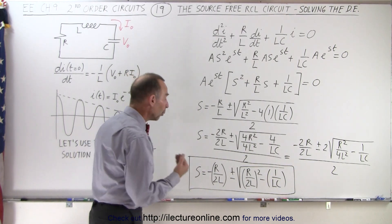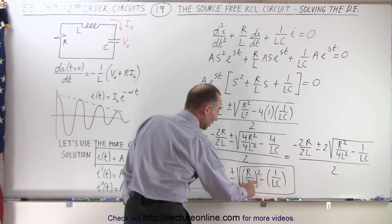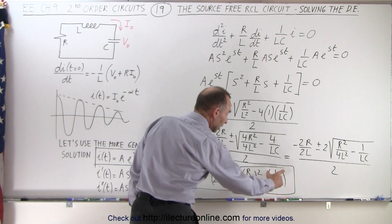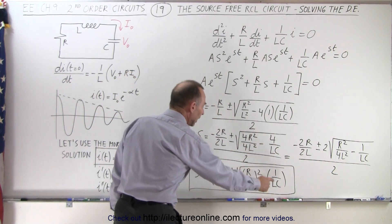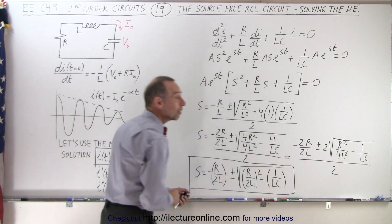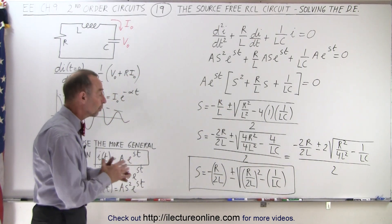And finally, what if this is smaller than 1 over lc? Then we have a negative underneath the radical, and we have an imaginary solution. So there's three possible solutions.